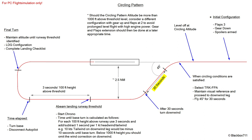If you lose sight of the runway then that means you have to go around. There are also circling approaches with so-called prescribed tracks and there are rules regarding visual contact to the runway, but this will not be covered in this video.